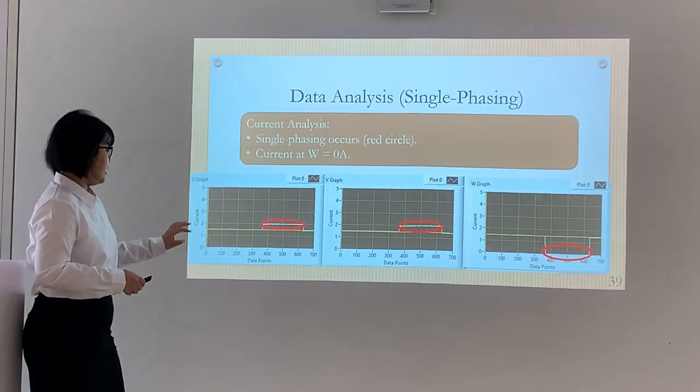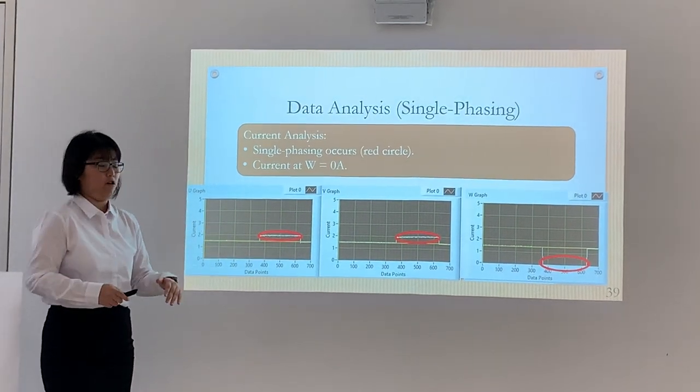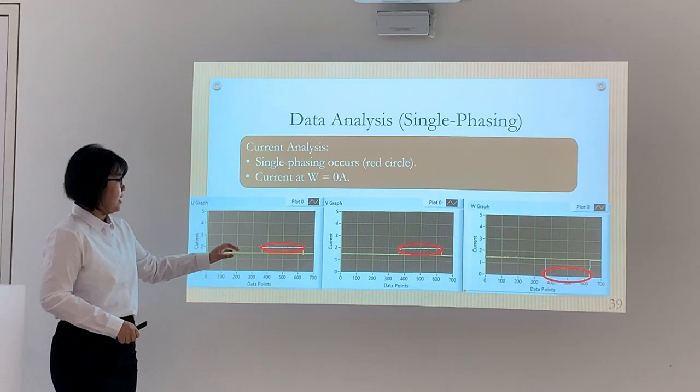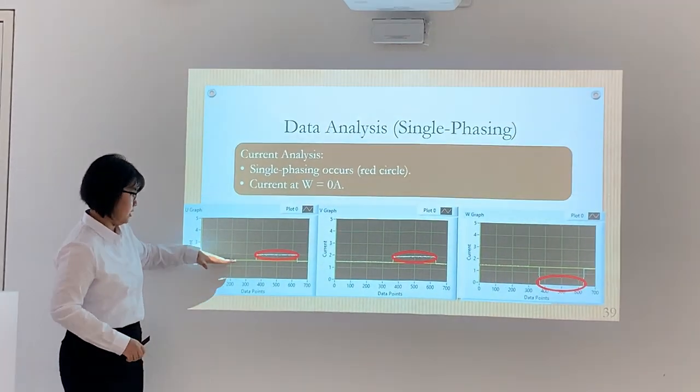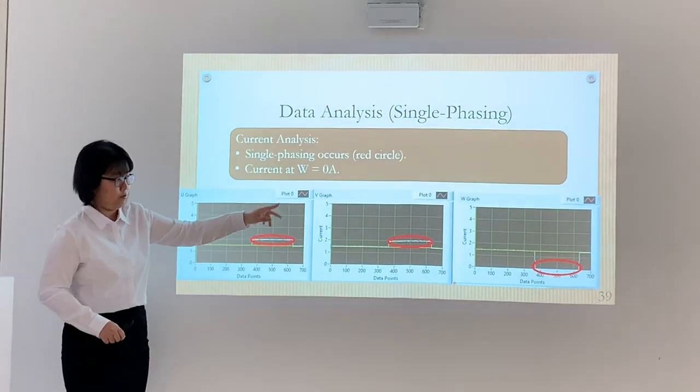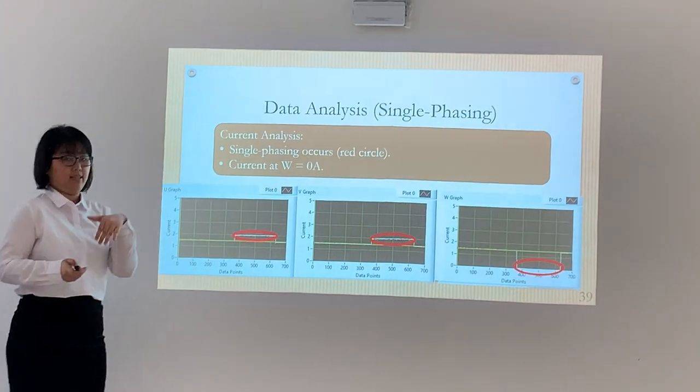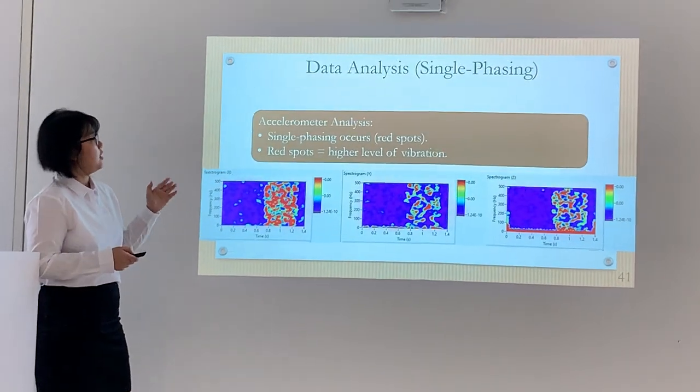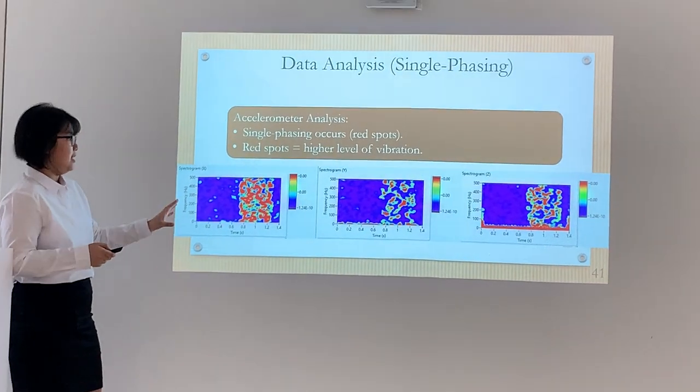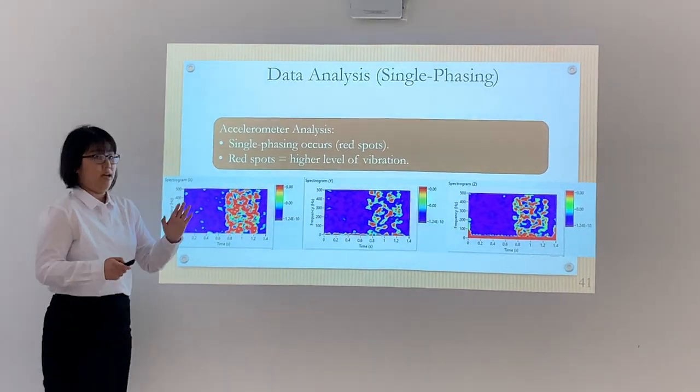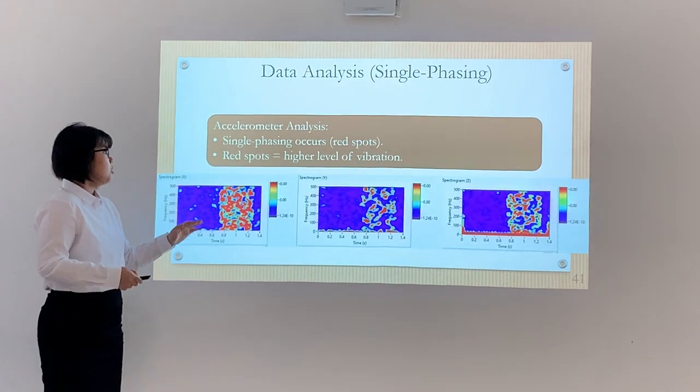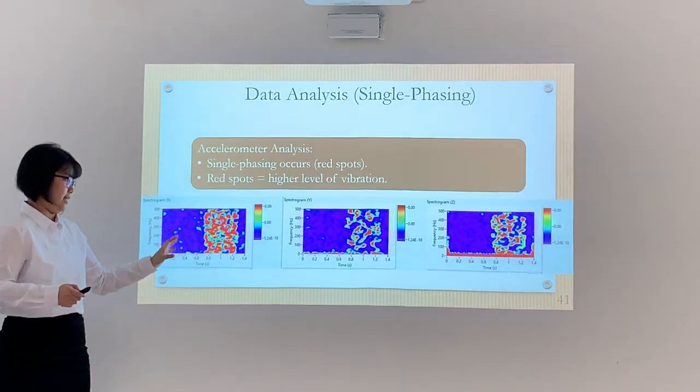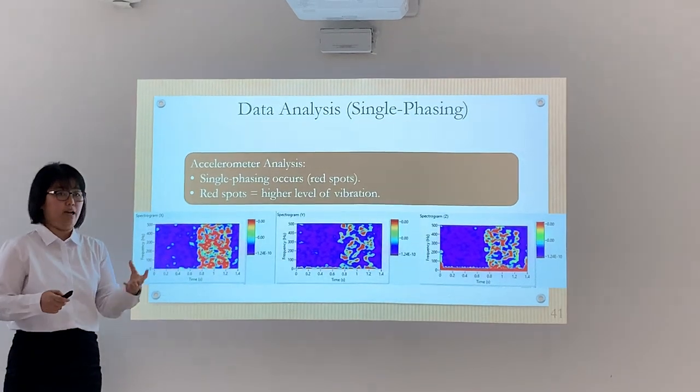These are the findings we got from our experiment. The red circles are where the fault occurs. This is U, V, and W graph. For U graph, initially the current was here and it spiked up when W goes to zero. This is where single phasing occurs. This is the spectrogram for single phasing. The red spots are where the fault occurs, meaning higher amplitude there.